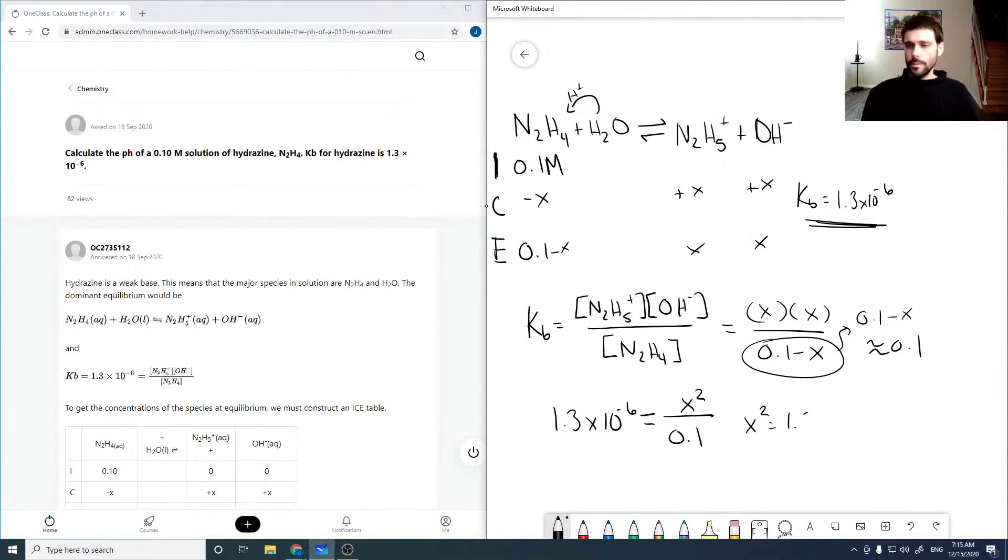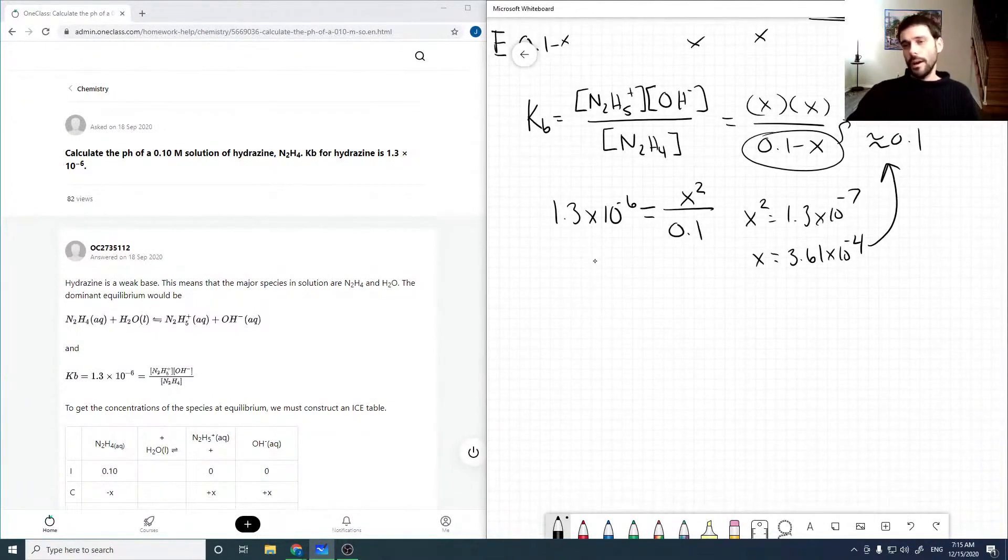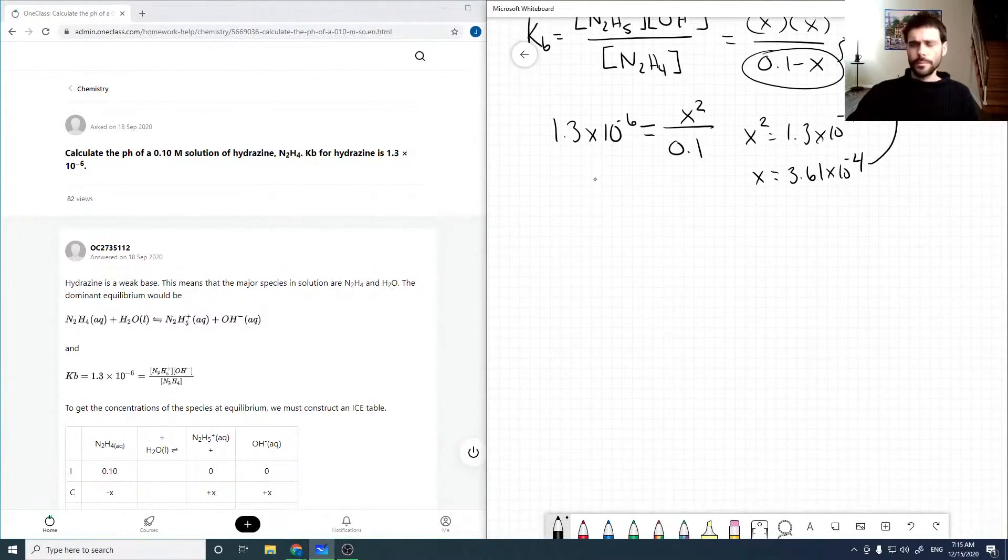Or x squared is 1.3 times 10 to the minus 7. Or x is 3.61 times 10 to the minus 4. Which, as you can see, validates this assumption up here as 0.1 minus 3 times 10 to the minus 4 is about 0.1.